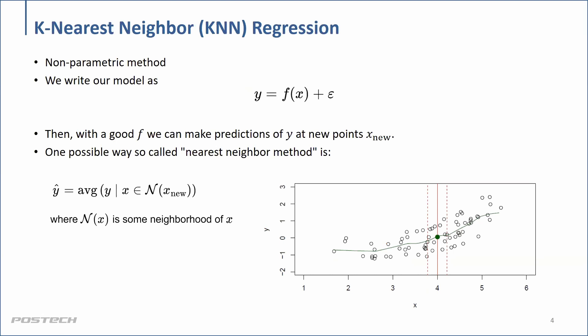Now, what is K-Nearest Neighborhood? The key thing to remember is that KNN is different from parametric function approximation — this is a non-parametric method. It's a totally different approach. It is also supervised learning, but we don't assume the function has to be parametric. It's okay to use a non-parametric method.